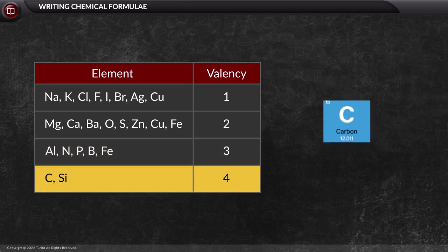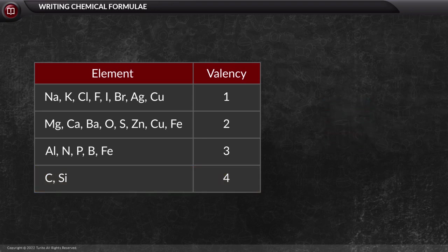Finally, carbon and silicon are for valency 4. By using this table, let us now see a few examples.